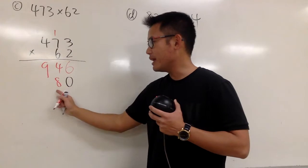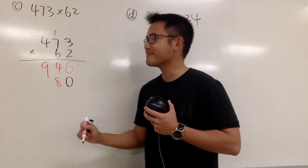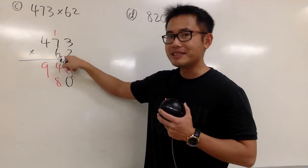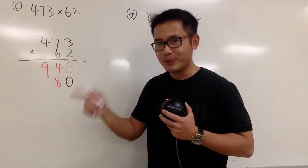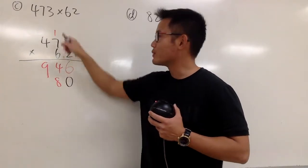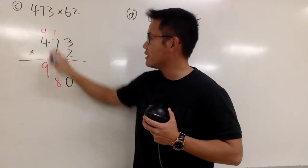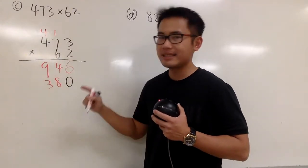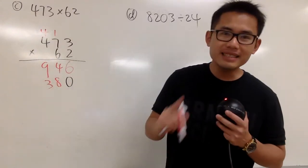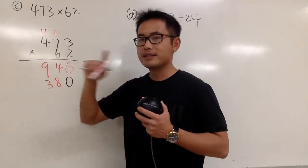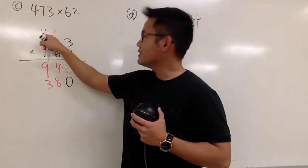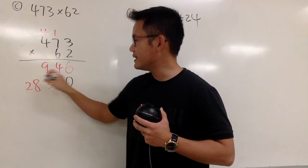And you see, we put down the 8 right here to begin with. And now, 6 times 4, I mean 6 times 7, is 42. 42 plus 1 is 43, like that. Lastly, 6 times 4 is 24, plus this 4, we get 28. So this is how you finish all that.